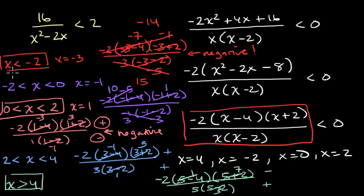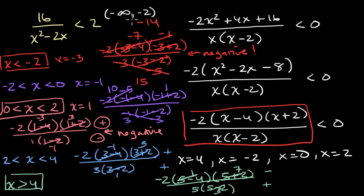So our solution set is: x less than negative two, or x between zero and two, or x greater than four. In interval notation, we write this as negative infinity to negative two (not including negative two, since it's strictly less than), union zero to two, union four to positive infinity. That's our solution set.